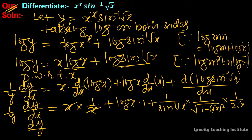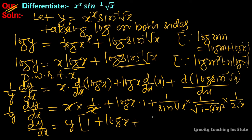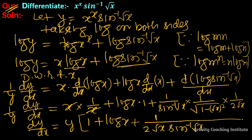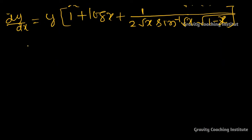So dy/dx equal to y into bracket of (1 plus log x) plus 1 upon (2 root x · sine inverse root x · root(1 minus x)).